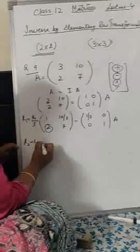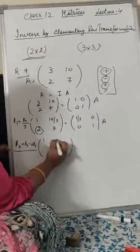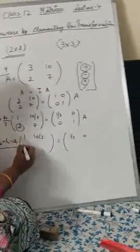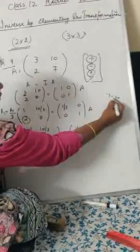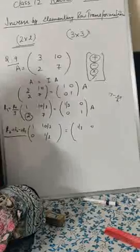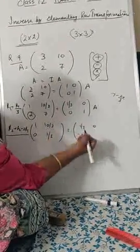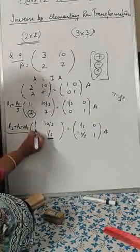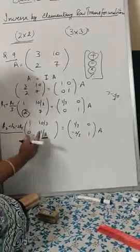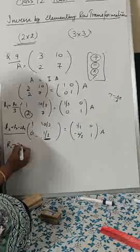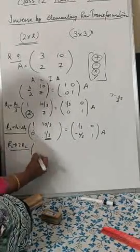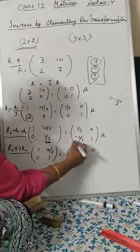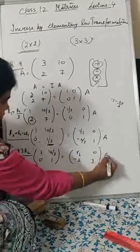Now make the (2,1) entry zero: apply R2 = R2 − 2R1. R1 stays the same. For R2: 2−2=0, 7−20/3 = 1/3, 0−2/3 = −2/3, 1 stays 1. Now I have to make the (2,2) entry equal to 1. I will multiply R2 by 3: R2 → 3R2. This gives [1, 10/3; 0, 1] and [1/3, 0; −2, 3] on the right.